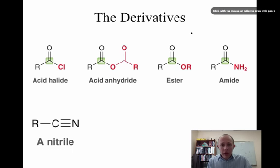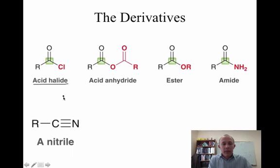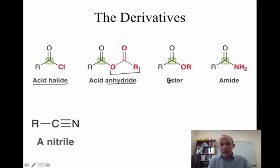So what are the different carboxylic acid derivatives that we're going to talk about? If you have a chlorine here, this type of derivative is called an acid chloride — those are the only kinds of acid halides we'll discuss. If the R group is O with another carbon-oxygen double bond, that's called an anhydride. If it's an OR and that R does not contain this carbon-oxygen double bond, we know that's called an ester.